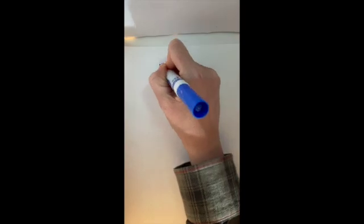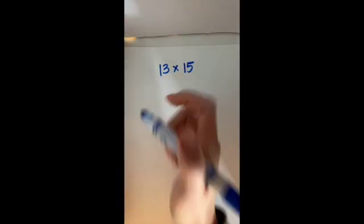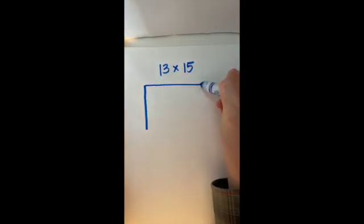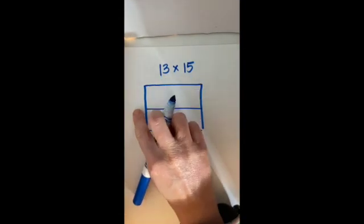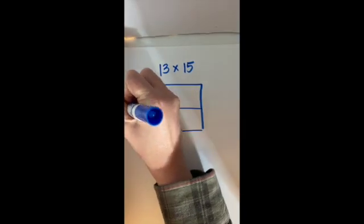Let's do one final example. Let's look at 13 times 15. Again, because it's two double digit numbers, I'm going to draw more of a square shape. I'm going to label one side with my 13. I'm going to break that up into 10 and 3.